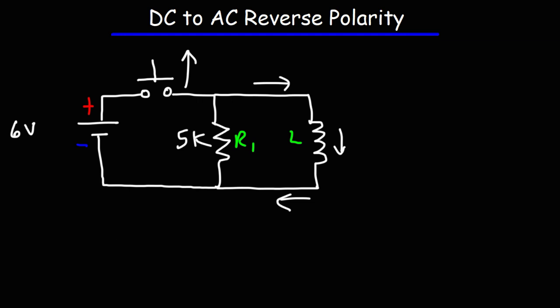After opening the switch, the battery will no longer be able to deliver current in the circuit. The inductor is going to try to maintain the current that was flowing in it — and the current was flowing in this direction. While the current is decreasing, the magnetic field around the inductor will begin to collapse. The energy that was captured by the inductor when the magnetic field expanded is now being released back into the circuit as the magnetic field collapses. When the magnetic field collapses, the polarity is going to reverse. Current is going to flow from the positive terminal of the inductor through R1 back to the negative terminal, until the inductor releases all of its stored energy. The polarity across the resistor is positive at the bottom, negative at the top, so current is flowing up through R1.